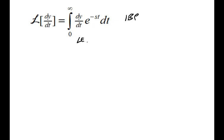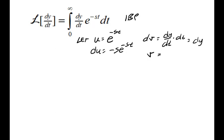We'll let u in our substitution, we'll let u equal e to the negative st, then du would be negative s e to the negative st. So we choose dv to be the dy dt dt. So therefore, this is the same as dy. So if dv equals dy, then v equals y of t.